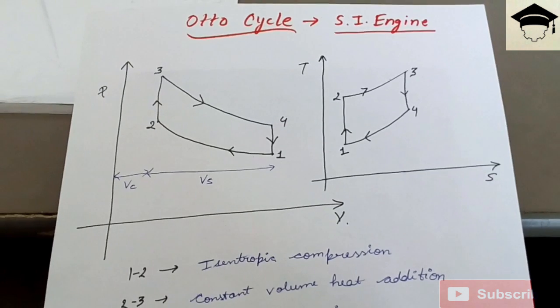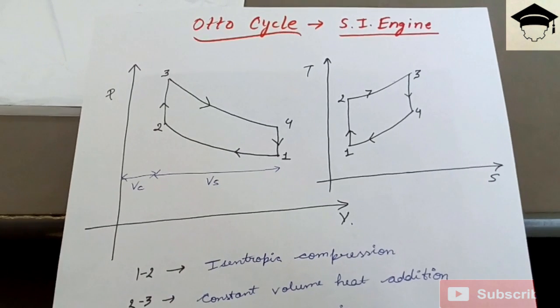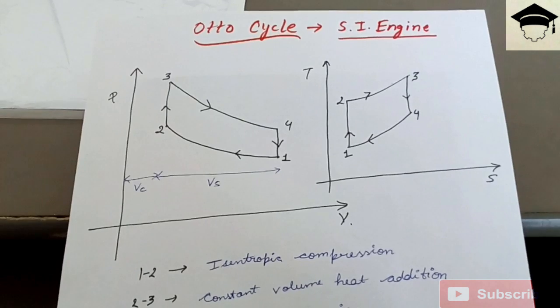Now starting with the video. Otto cycle which is primarily used in SI engine or spark ignition engine. The name Otto cycle is given because the scientist who discovered it was Otto.